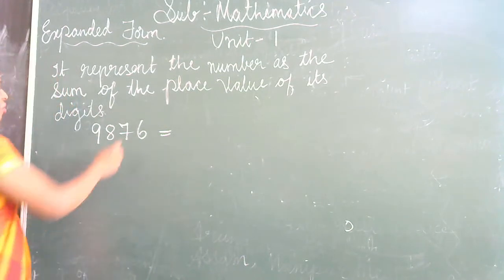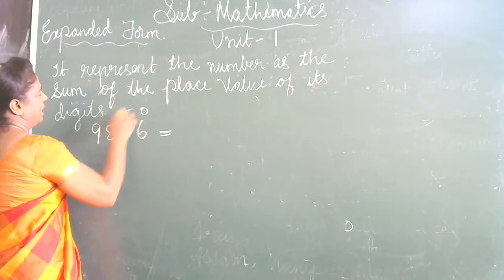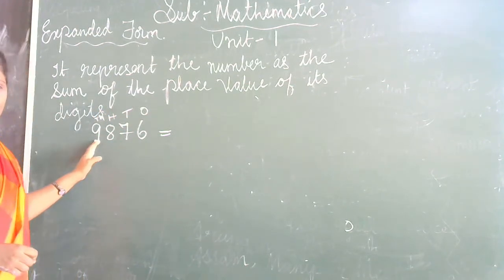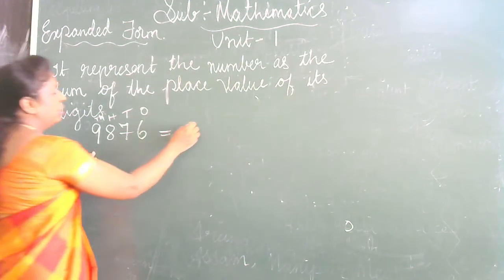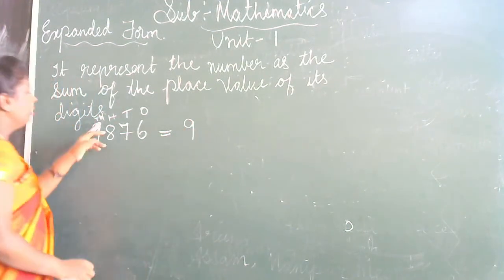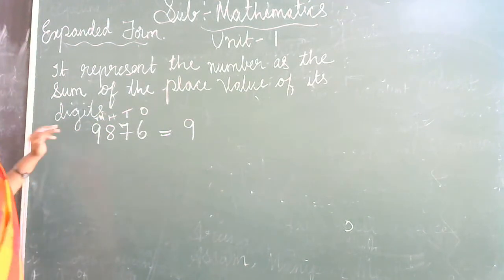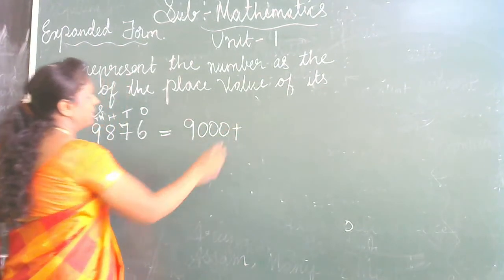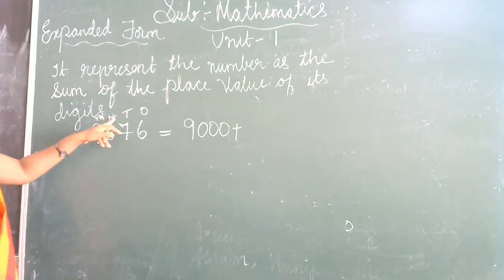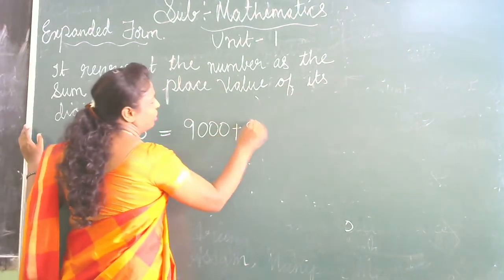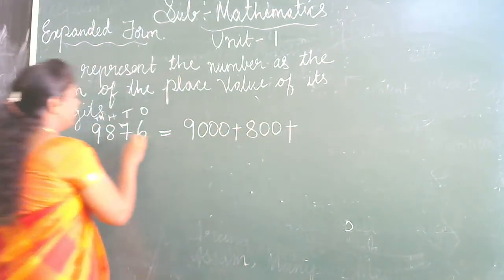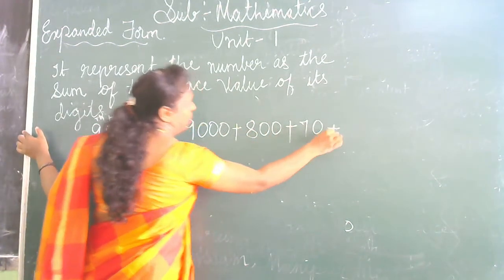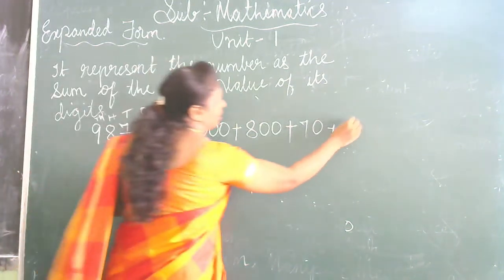Let's go now. First write the place values: 1, 10, 100, and 1000. So write the first digit here — the first digit is 9, so write 9 times 1000, which has 3 zeros, so 9000. Plus 8 times 100 — 100 has 2 zeros. Plus 7 times 10 — 10 has 1 zero. Plus 6.